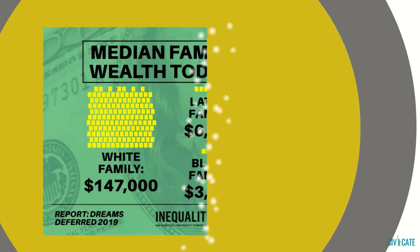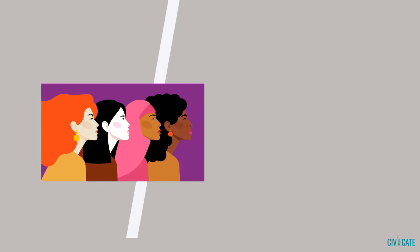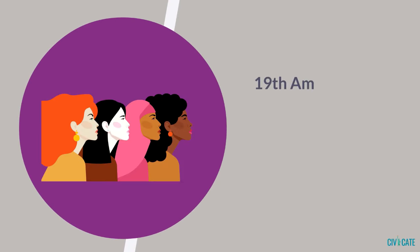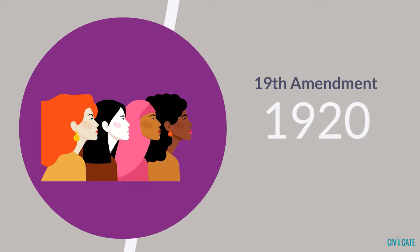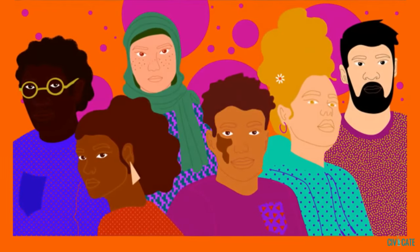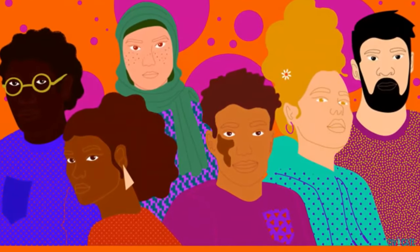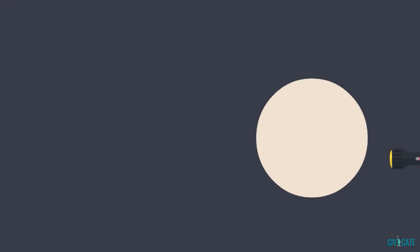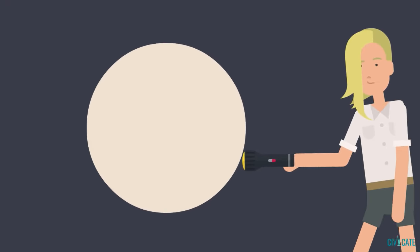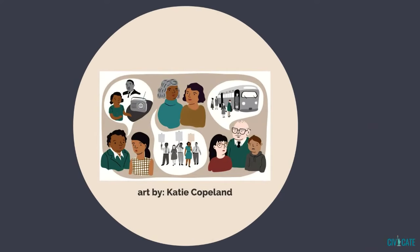Even today, much needs to be done to improve racial justice. Women did not get the right to vote until the 19th Amendment passed in 1920. Many other groups have fought and continue to fight for equal treatment under the law. Even with all the progress that has been made in the last two centuries, civil rights and civil liberties are relevant to our lives today.